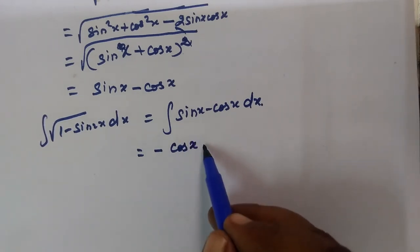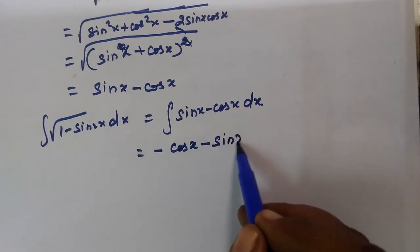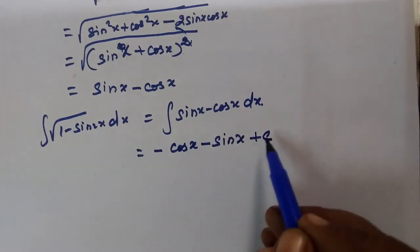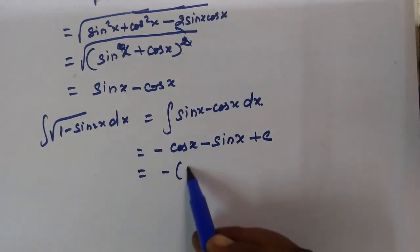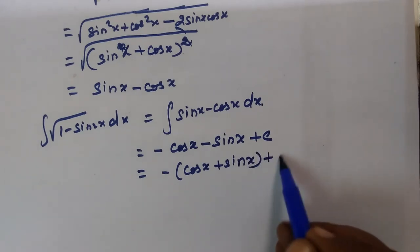minus cos x. Cos x integrates to minus sin x, but the question has minus, so minus minus gives plus. So minus sin x, plus c. Taking minus common,